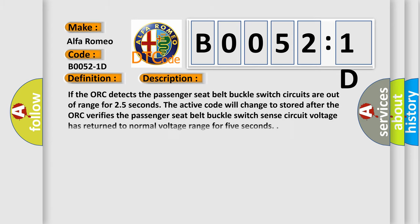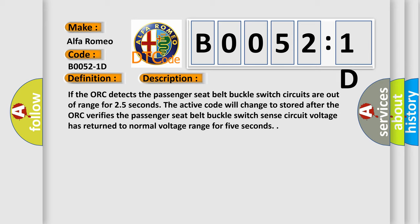And now this is a short description of this DTC code. If the AUK detects the passenger seat belt buckle switch circuits are out of range for 2.5 seconds, the active code will change to stored after the AUK verifies the passenger seat belt buckle switch sense circuit voltage has returned to normal voltage range for 5 seconds.